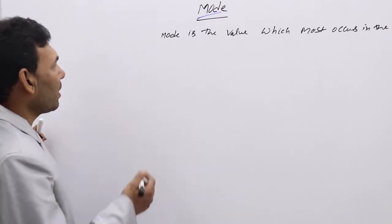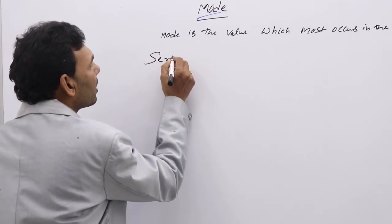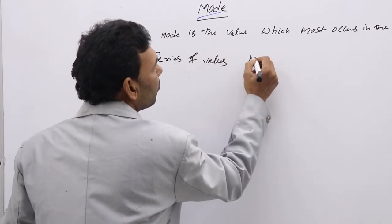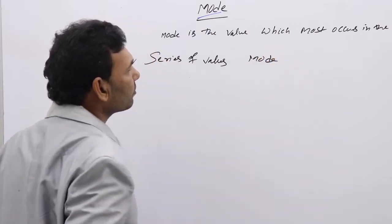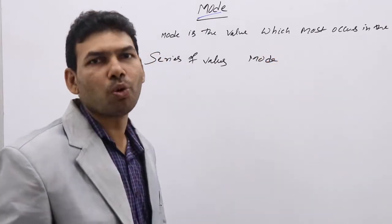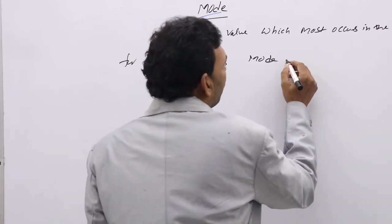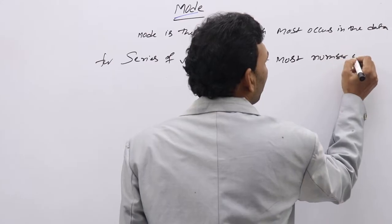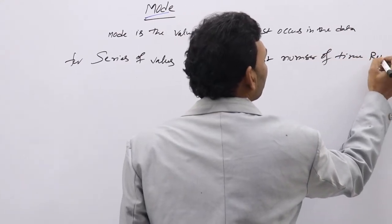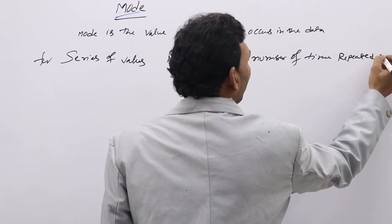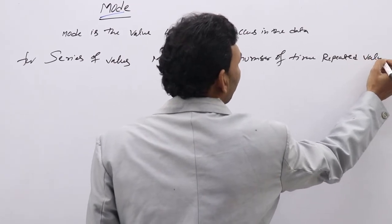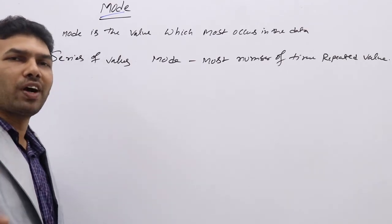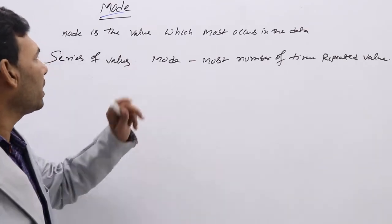In raw data, when a series of values are given, mode is the same — the value which most occurs repeatedly. The most number of times repeated value is the mode. For example, if one value is repeated three times, another four times, and another five times, the five-times-repeated value will be the mode.